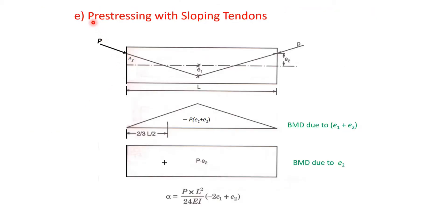Another case is pre-stressing with sloping (linearly varying) tendons — a straight profile with eccentricity e2 at the ends and e1 at the midsection. Applying the same superposition concept — dividing into (e1 + e2) at center causing one BMD and constant e2 causing another — and solving for deflection, we get: delta = (PL²/24EI) · (−2e1 + e2).